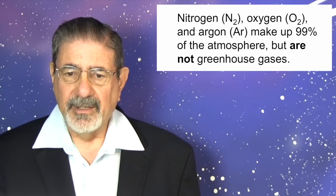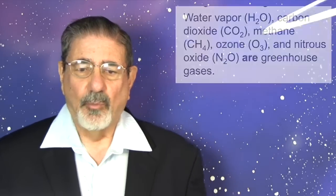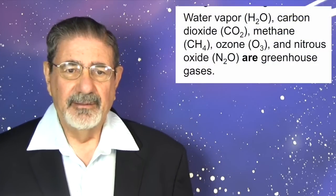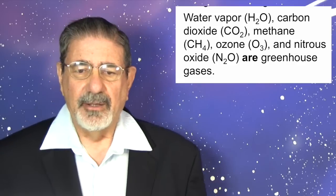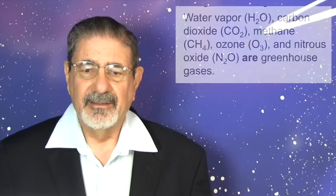What's the big greenhouse gas? Most people don't talk about it, but it's water vapor, H2O — it absorbs infrared light. And the Earth is about covered with four-fifths water. No one is talking about controlling the water in the Earth's atmosphere; in fact, that's not a good idea.